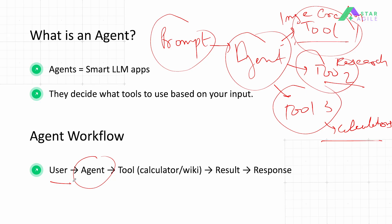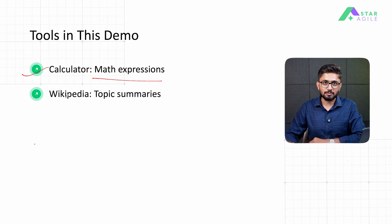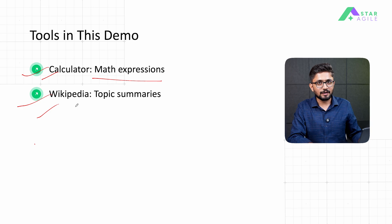The workflow for an agent looks something like this: it begins by receiving a prompt from the user, the prompt is evaluated by the agent, and then the agent calls the corresponding tool — for example, a calculator tool or a Wikipedia research tool. Depending upon which tool is called, we get a result and the response is formatted by the agent. For this demonstration, we are going to create two tools: a calculator tool for evaluating mathematical expressions, and a Wikipedia research tool.